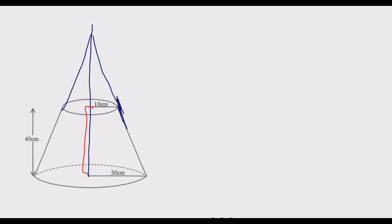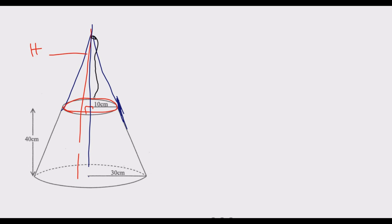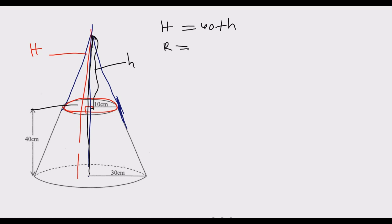From the base of the frustum to the top of the frustum is 40 cm — that is the perpendicular height. The overall height of the full cone goes all the way up. There is a small cone on top whose height starts from the top of the frustum going upward. The large radius at the base is 30 cm and the small radius at the top is 10 cm.